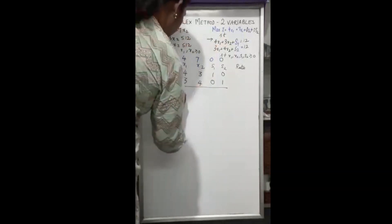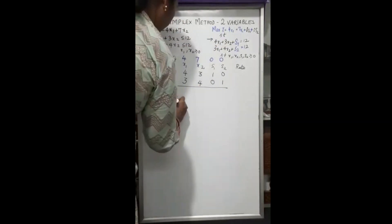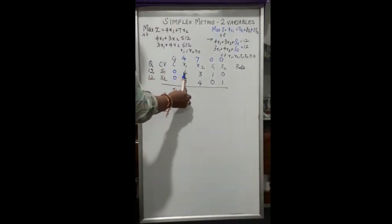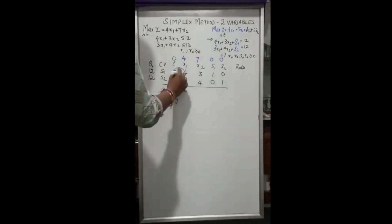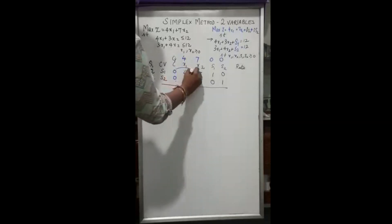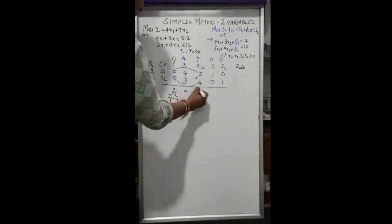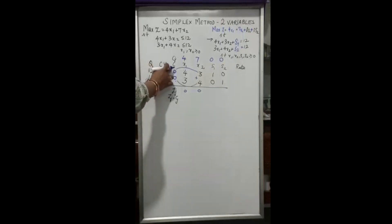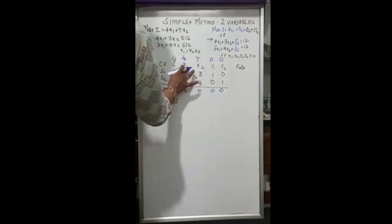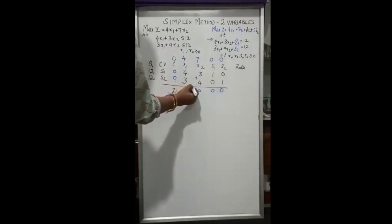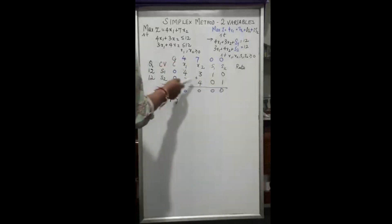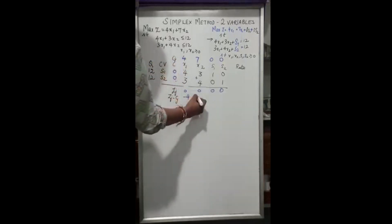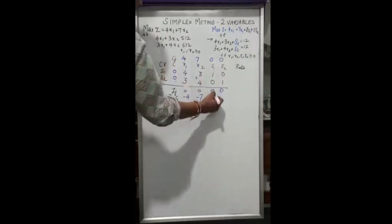Now we compute zj and zj − cj. The zj value is obtained by multiplying the c column values with each column's coefficients and adding. Since all current variable coefficients in the objective function are 0, all zj values are 0. The zj − cj values are: 0 − 4 = −4, 0 − 7 = −7, 0, and 0.